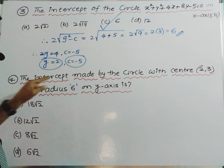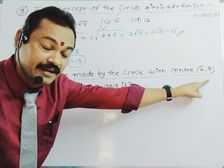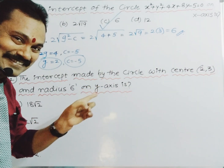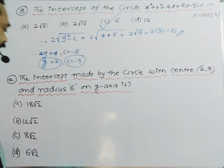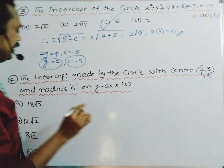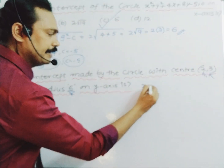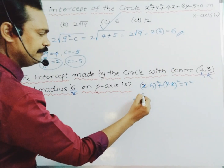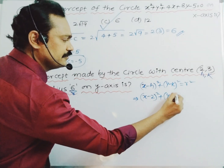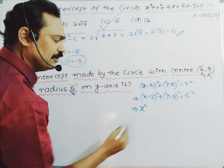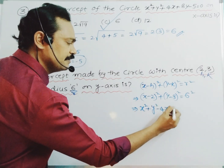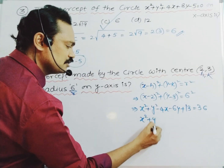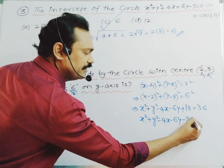Let's go to the fourth question. The intercept made by the circle with center (2, 3) and radius 6 on the y-axis. Center is (h, k) = (2, 3) and r = 6. Circle equation: (x-2)² + (y-3)² = 36. Expanding: x² + y² - 4x - 6y + 4 + 9 = 36, which gives x² + y² - 4x - 6y - 23 = 0.